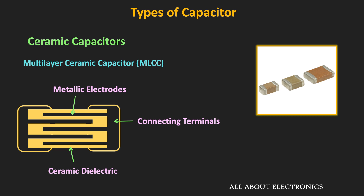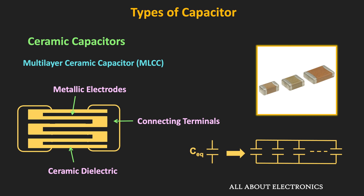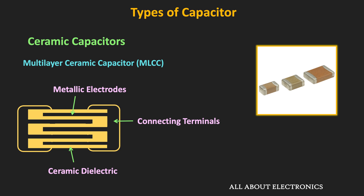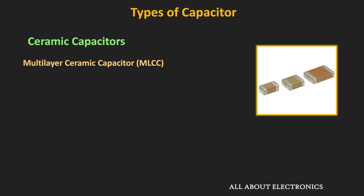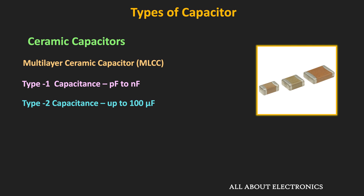Due to this construction, the overall capacitance of MLCC can be visualized as many small capacitors connected in parallel. For type 1 MLCC, capacitance ranges from picofarads to nanofarads, and they are used in applications where precision and stability are required. Type 2 MLCCs are available with capacitance up to 100µF.